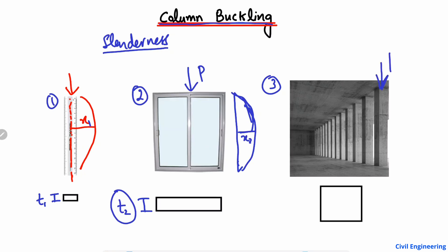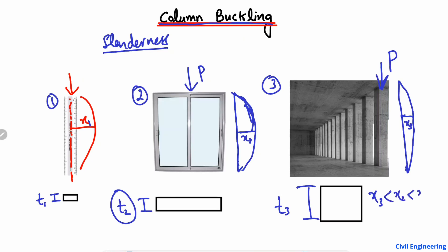In the third case, consider a column. If I apply load P, and the column has a thickness t3 — which is much higher than t1 and t2 — then it will show very low buckling, x3, at the center. So x3 is smaller than x2, and x2 is smaller than x1, because the higher the thickness, the lower the buckling in the lateral direction.